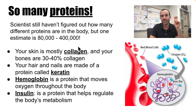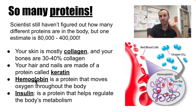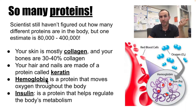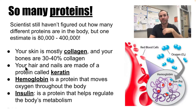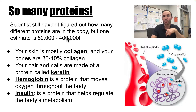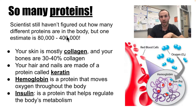Your hair and nails are made of a protein called keratin. We have a protein called hemoglobin that moves oxygen throughout the body — we would die without it. And we have a protein called insulin that helps our body regulate metabolism. These are just four out of the roughly 80,000 to 400,000 different types of proteins in our body.